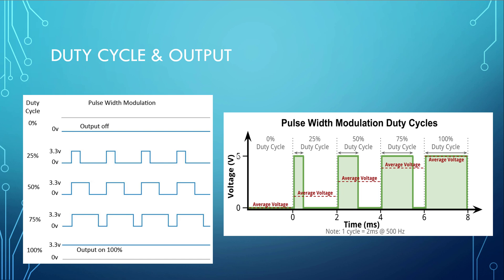Note that the 5V example shown is not for NRF devices — for our purposes 3.3V is the main supply voltage. By increasing and decreasing the duty cycle we change the average output voltage, which allows us to change LED brightness, drive motors, and use PWM in power switching applications.